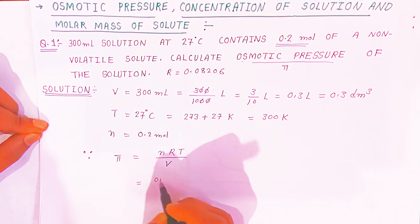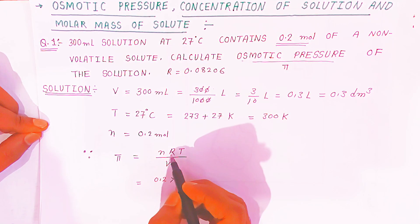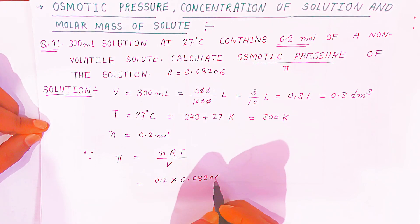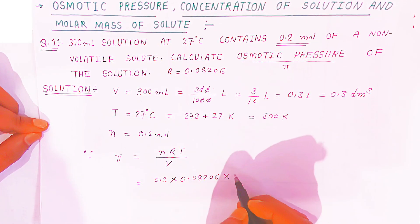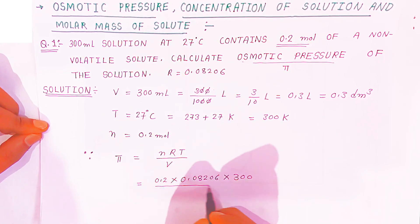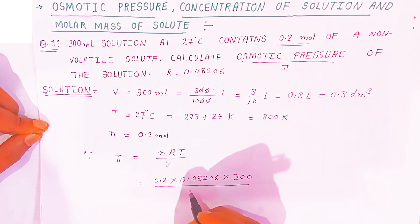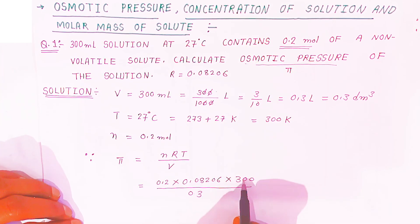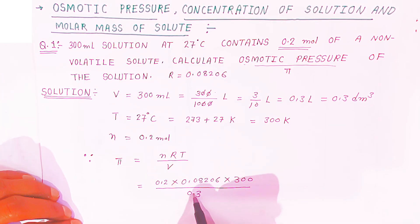Number of moles is given 0.2. You have to multiply with constant R, that is 0.08206. Temperature is 300 K. Volume you have calculated as 0.3. Now this is the multiplication—decimal number multiplication and division of decimal number by 0.3.